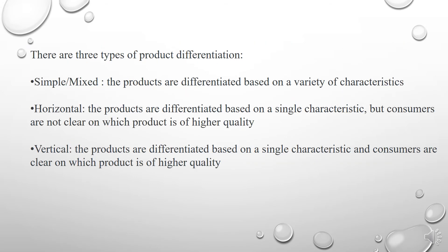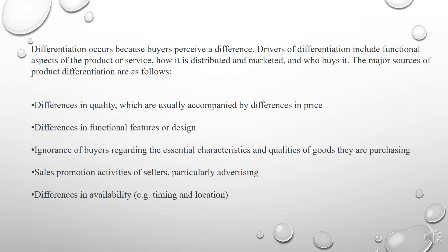Now we learn about the product differentiation types. There are three types of product differentiation. The first one is simple or mixed product differentiation, where products are differentiated based on a single characteristic but consumers are not clear on which product is of higher quality. The third type is vertical differentiation, where products are differentiated based on a single characteristic and consumers are clear on which product is of higher quality. Differentiation occurs because buyers perceive a difference.